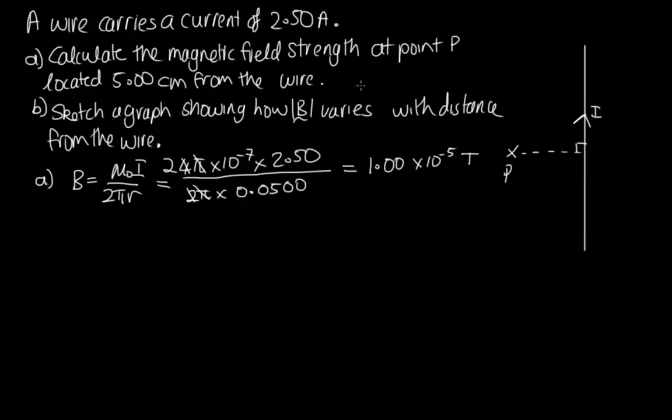And now we should give the direction of the magnetic field. It only asks us for the strength, but let's just work out the direction as well. Using your right hand rule, point your thumb up the screen in the direction of I. And your fingers at P are pointing out the screen towards you. So out of the screen.